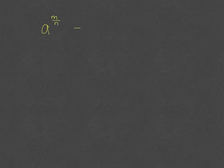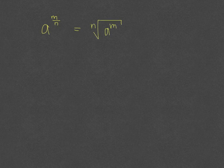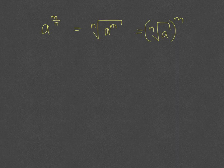The next rule is that a to the m over n equals the nth root of a to the m power. You can also write it as the nth root of a, all to the m power. The top number is the power and the bottom number is the root.